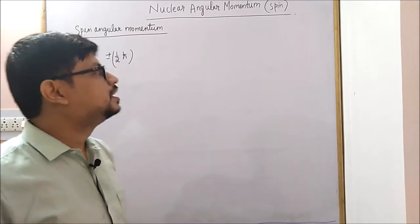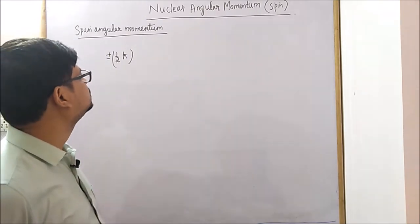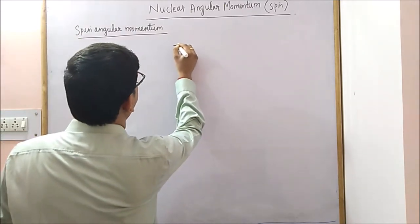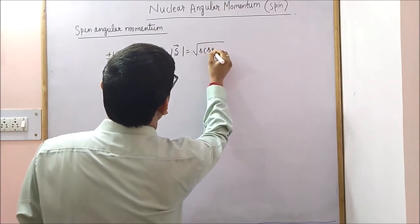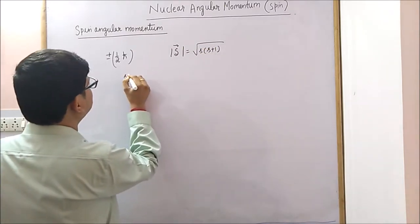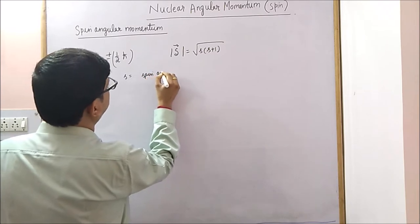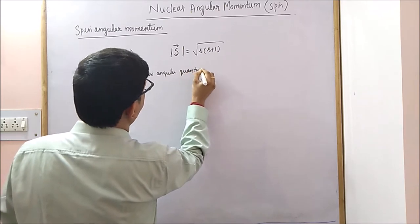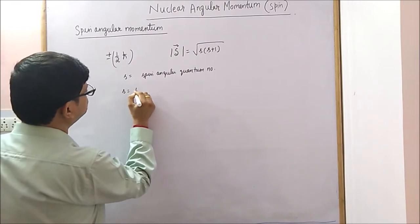Each nucleon — neutron or proton — quantum mechanically has a spin angular momentum S whose magnitude is given by √(S(S+1)) h-cross, where S is called the spin angular momentum quantum number. Its value is one-half.